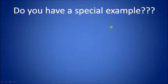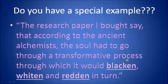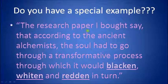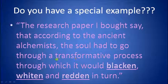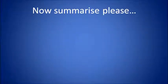Here is a very special example. According to the ancient alchemists, the soul had to go through a transformative process through which it would blacken, whiten, and redden in turn. So 'blacken,' 'whiten,' and 'redden' are the incoative verbs here — they suggest a transformative process, a gradual development and transformation of state. That is what incoative or inceptive verbs express.